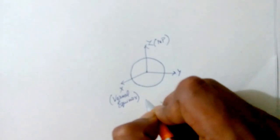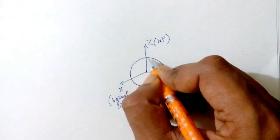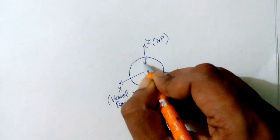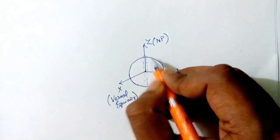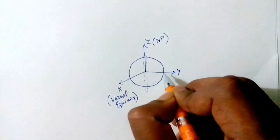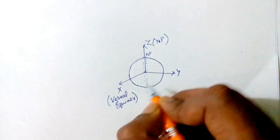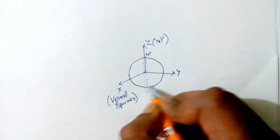So here you will notice that the z-axis coincides with the spin axis of the Earth. By spin axis of the Earth, I mean the axis about which the Earth spins. This axis passes through the North Pole and the South Pole of the Earth, the geographical North Pole and the geographical South Pole.